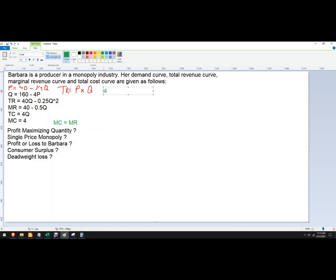So marginal cost is 4, and then marginal revenue is 40 minus 0.5Q. So we'll bring it to be 36 equals 0.5Q, and then Q is, I think it's just going to be 72.